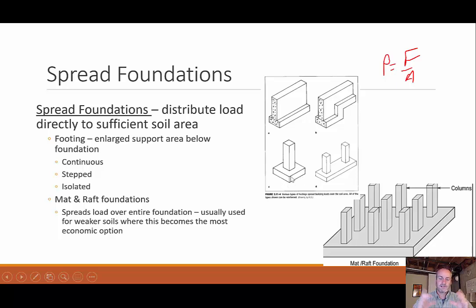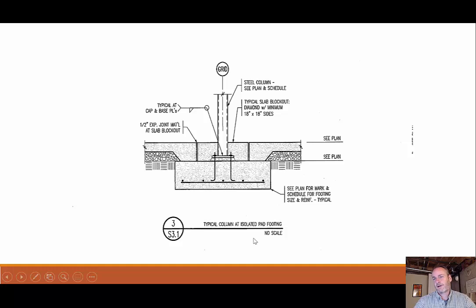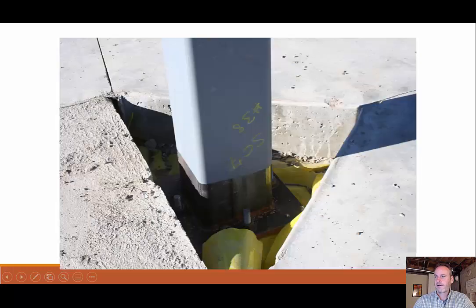We have an isolated footing, meaning it's just its own little entity. Here, two columns are supported by a single footing. If you have very weak soil, you may need to distribute over a much wider area — in that case, you might have a mat or raft foundation supporting a bunch of columns. Here's a typical column detail showing our footing. Note the 'typical slab blockout' — because of this blockout, all building loads are transmitted through the column down to the footing. The slabs are not actually supporting the building loads; they're more self-supporting.